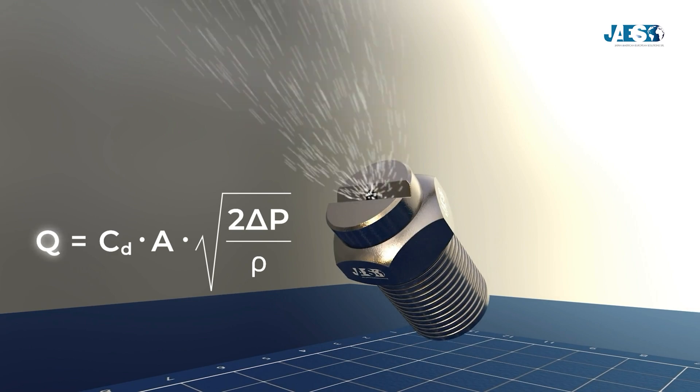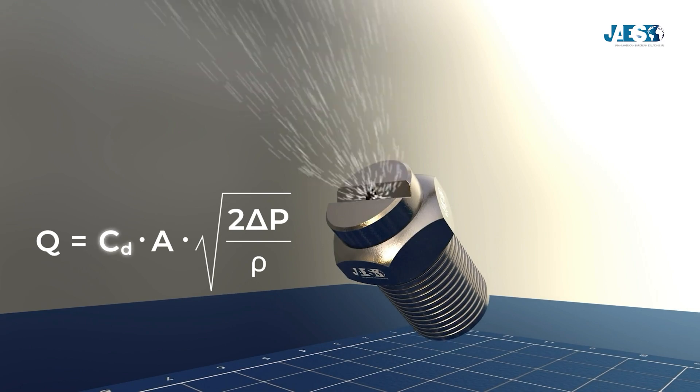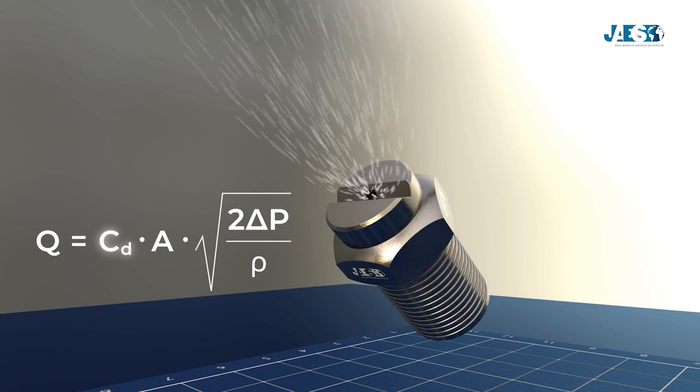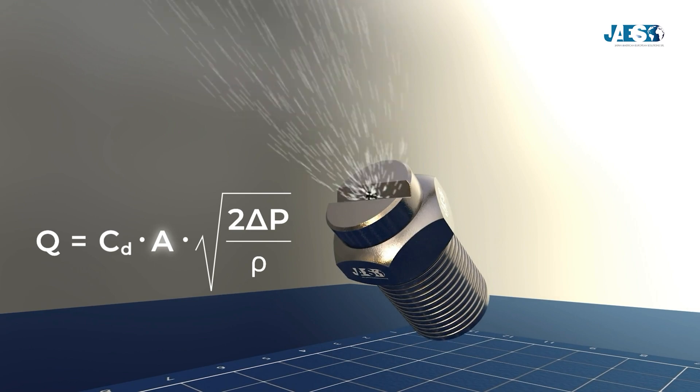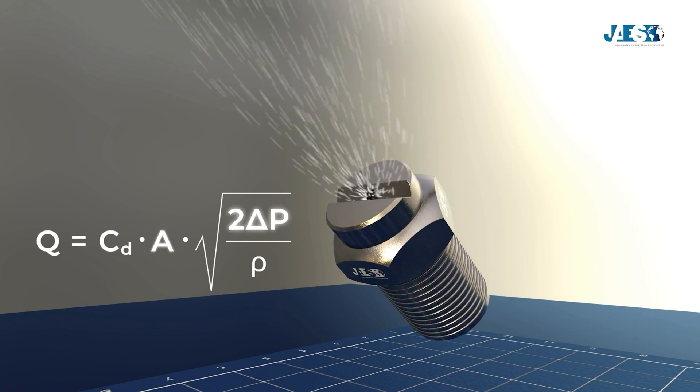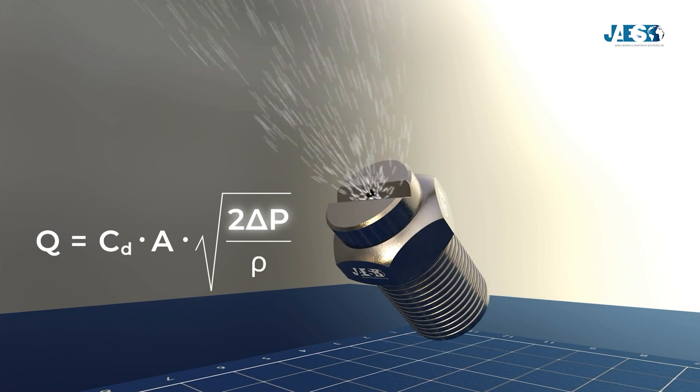Where q equals the flow rate, which can be measured in liters per minute, cd equals the discharge coefficient or the efficiency, a equals the orifice area, delta p equals the pressure difference, in versus out, and rho equals the fluid density.